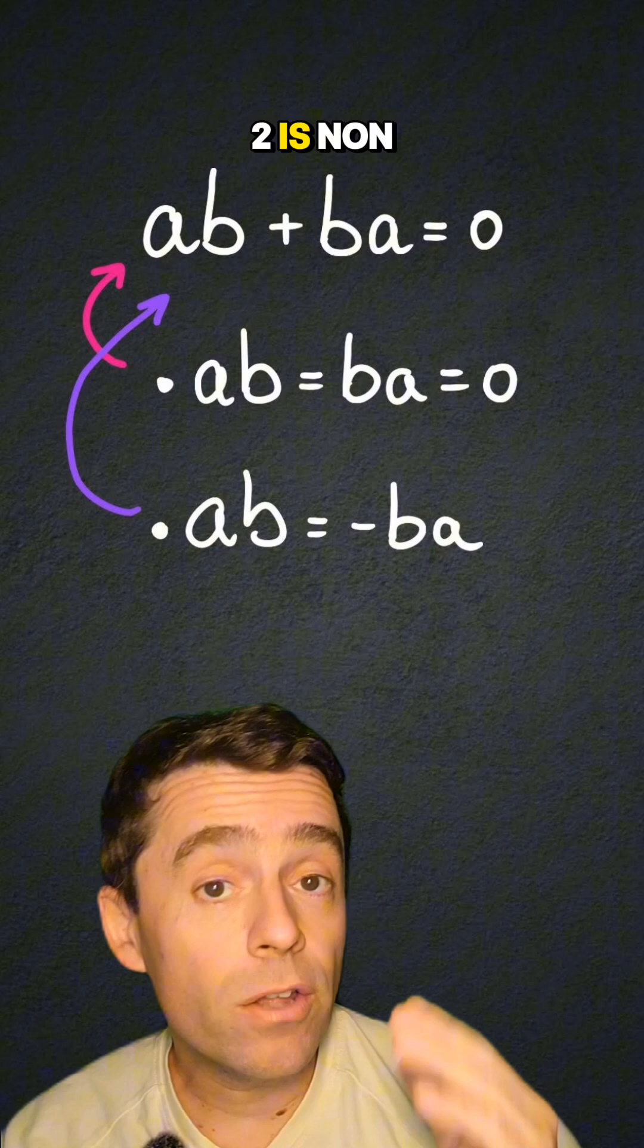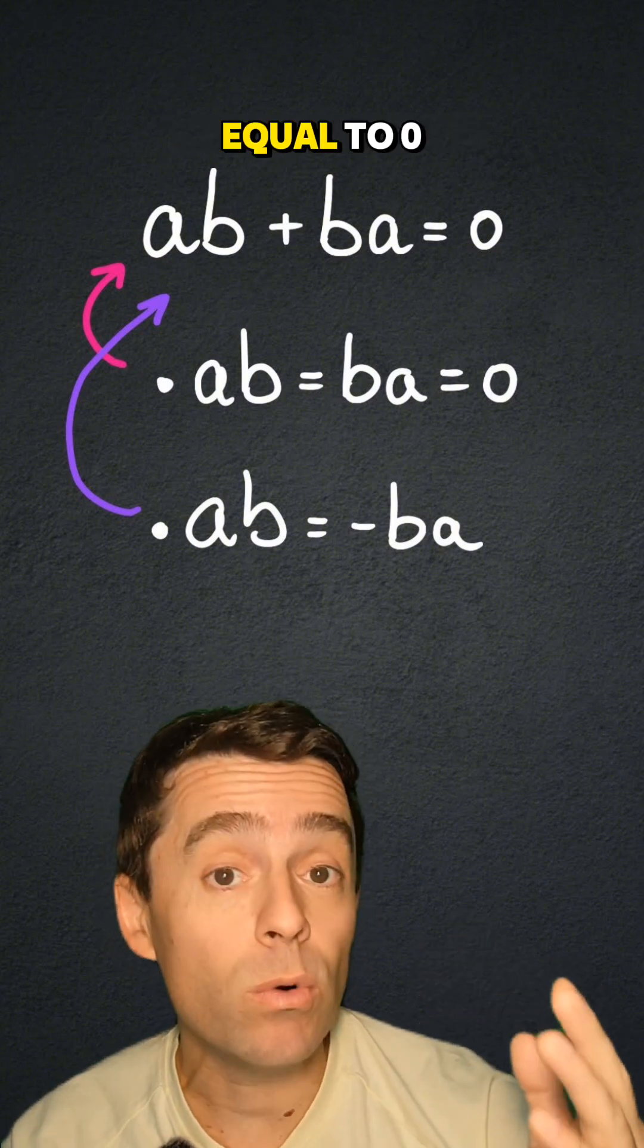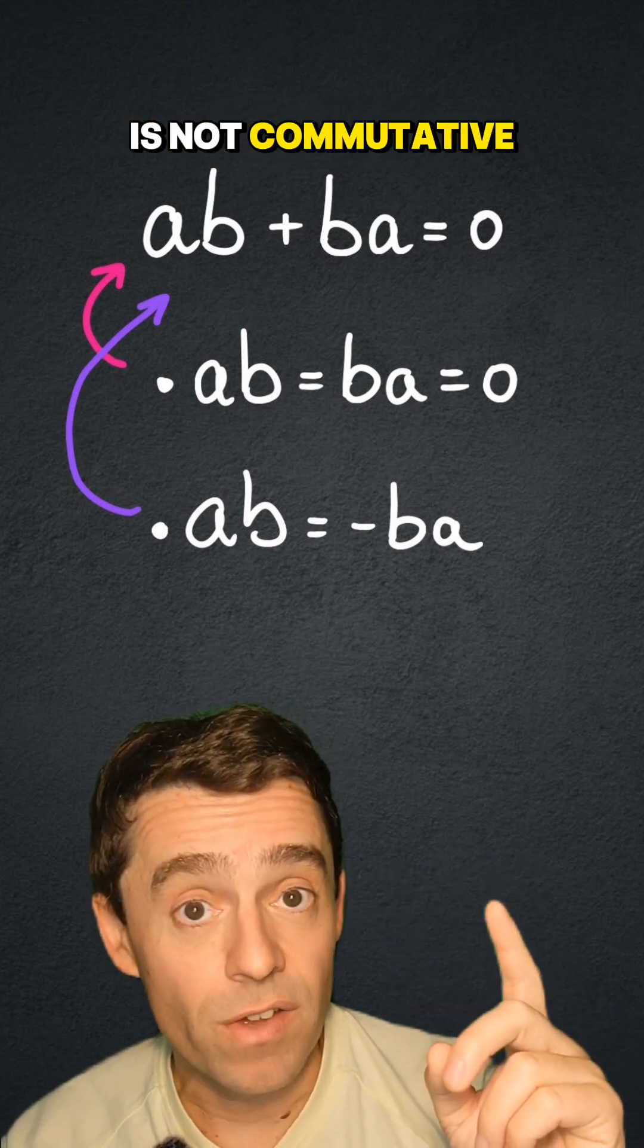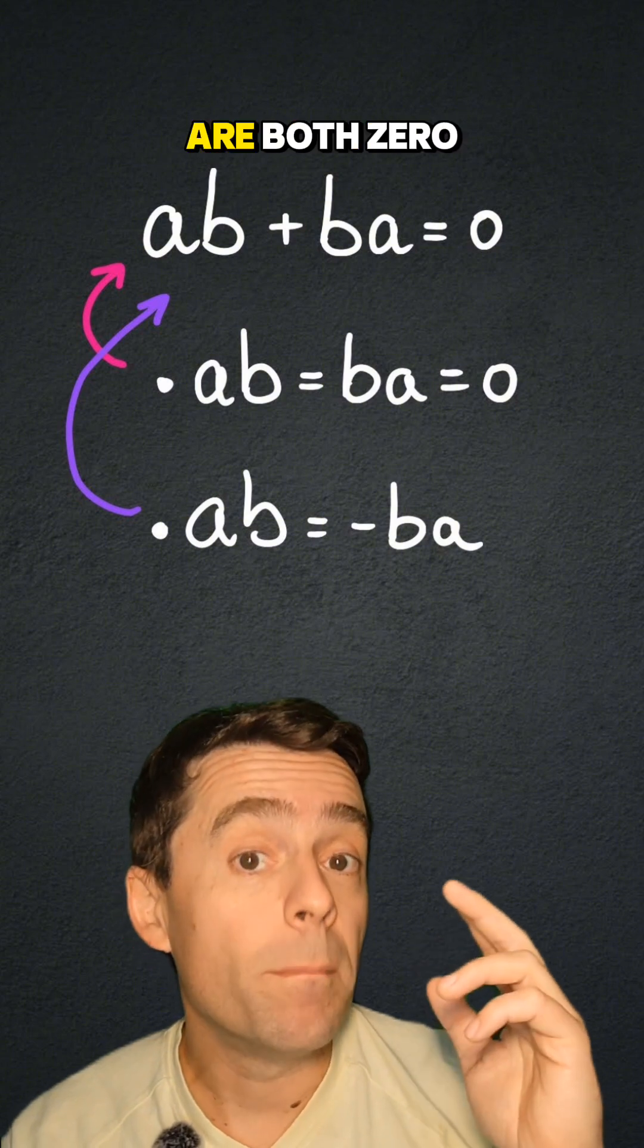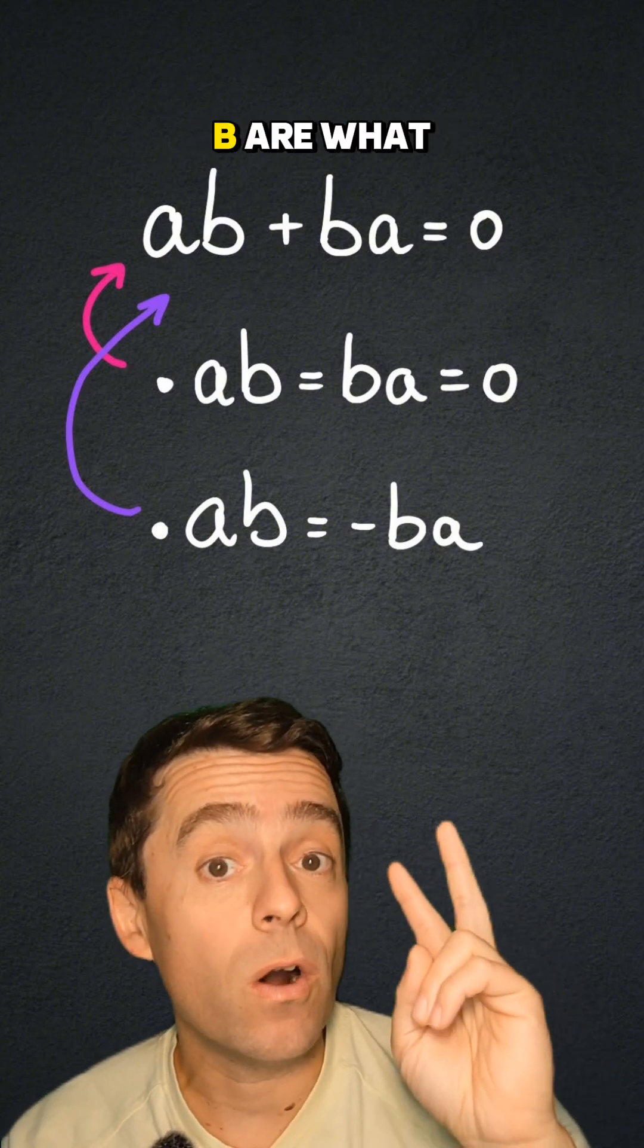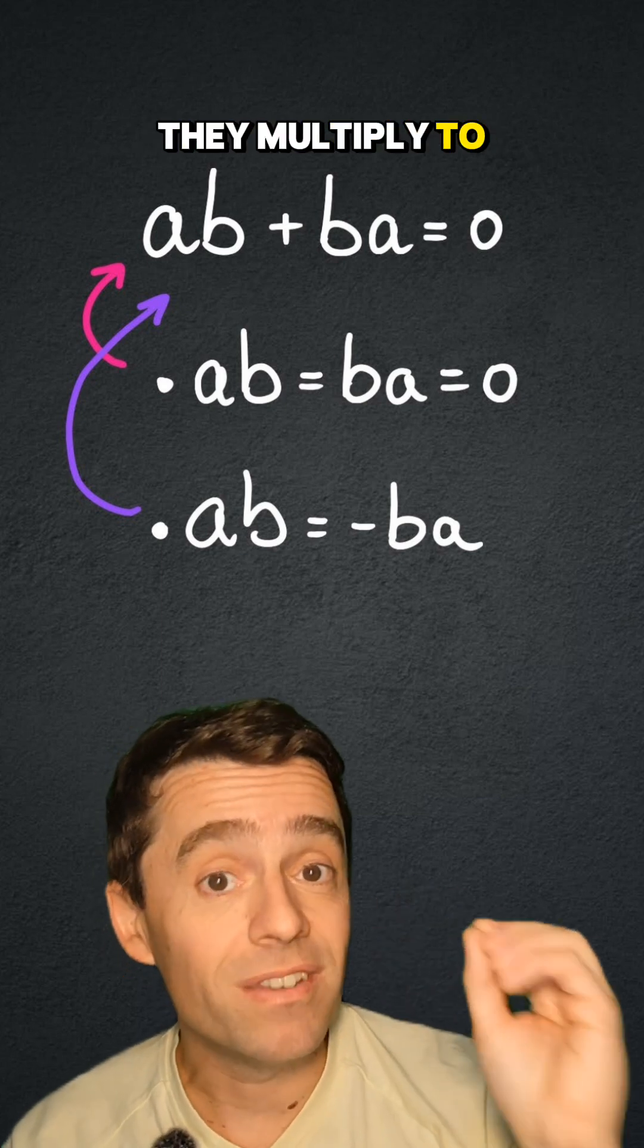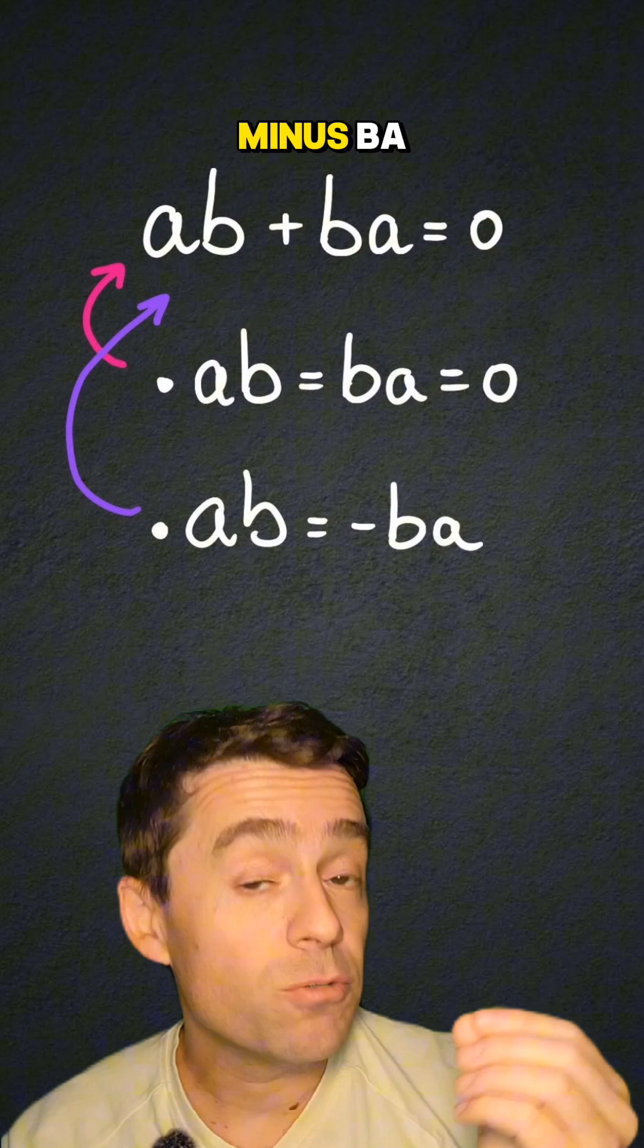But even if 2 is non-zero, there are other ways that ab plus ba can be equal to zero when we have rings where multiplication is not commutative. For example, you could have that ab and ba are both zero. So a and b are what we call zero divisors, elements that are non-zero, but they multiply to be zero. Or you could have that ab is equal to minus ba.